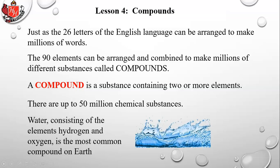Water, consisting of hydrogen and oxygen, is the most common compound on Earth. Oxygen is the most common element on Earth, and hydrogen is the most common element in the universe — 74%, three-fourths of the entire universe, is made up of hydrogen.